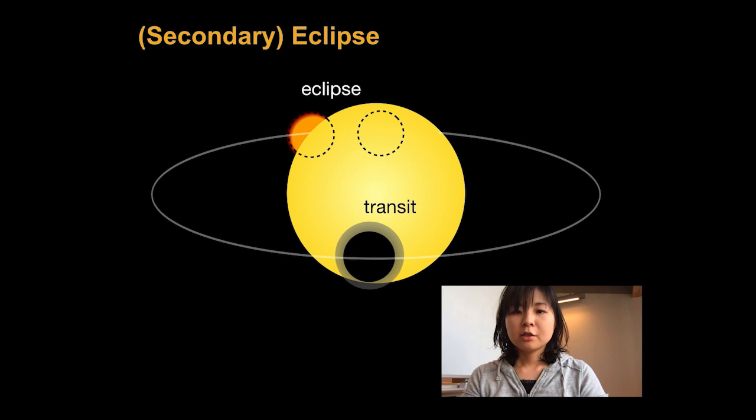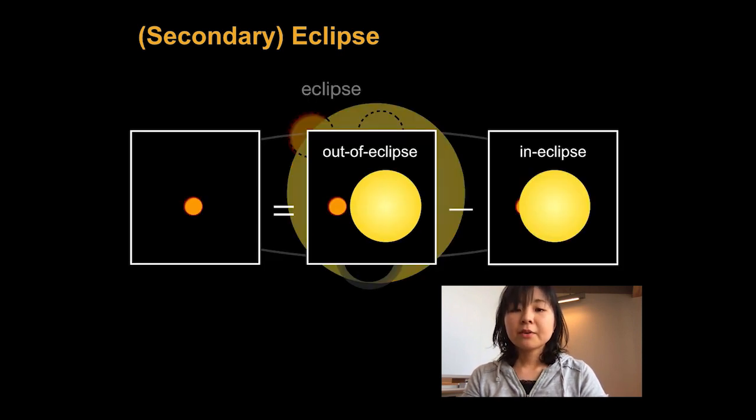In many cases, transiting planets also pass behind the host star, and it's called planetary or secondary eclipse. At the time of the eclipse, the planetary flux is blocked by the star. So the difference between the out of eclipse total flux and the in-eclipse flux corresponds to the brightness of the planetary dayside. This way, using planetary eclipse, we can identify the spectrum of the planet without directly separating the star and the planet in the imaging plane.